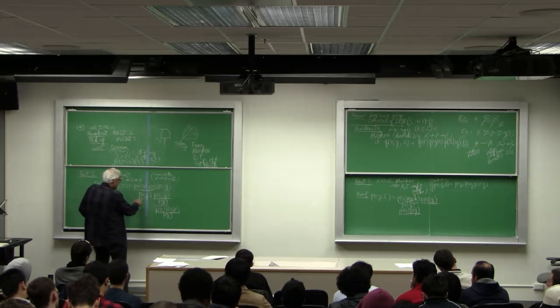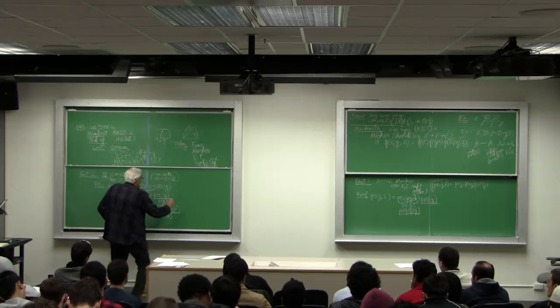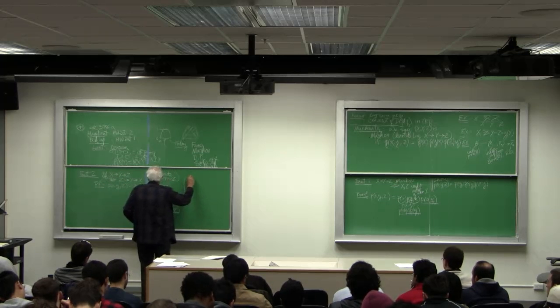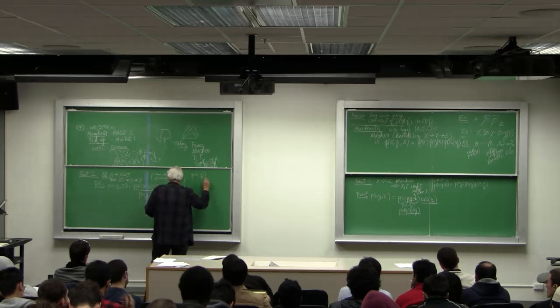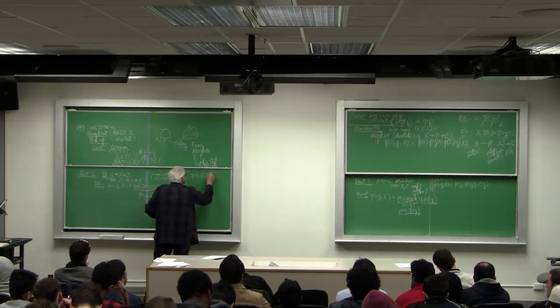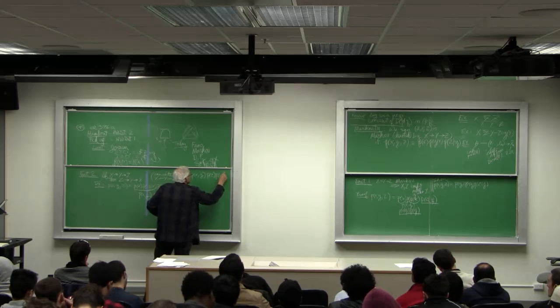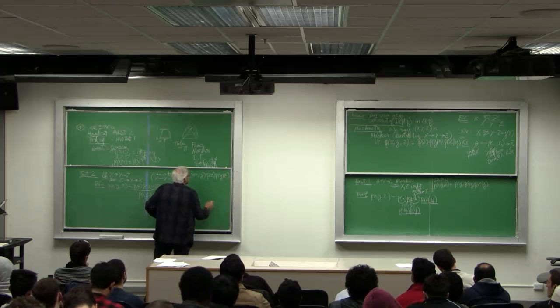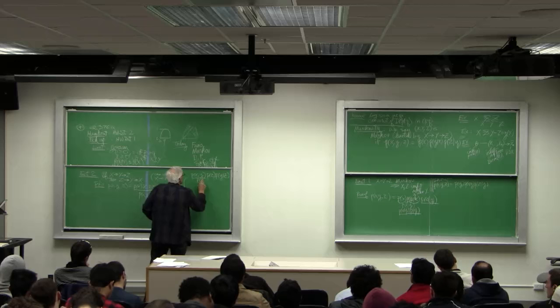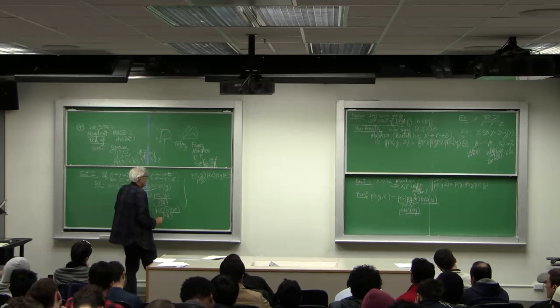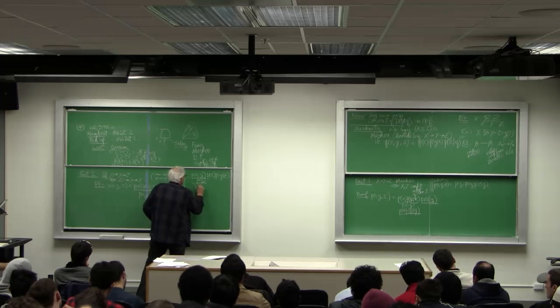Now we put this up here. So, this whole thing now is P of X, Y, P of Z, P of Y given Z over P of Y. I brought that over here. But this then becomes P of X given Y.